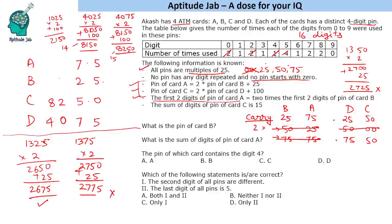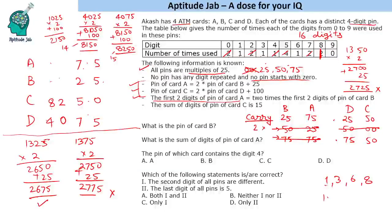Now let's find the digits remaining for A and B. Digits used so far: 0 (used), both 2s (used), 4 (used), all four 5s (used), both 7s (used), one 8 (used). The digits still available for the four positions in A and B are 1, 3, 6, and 8. We need two two-digit numbers where the first is double the second. The only possibility is 36 = 2 × 18. So B's first two digits are 18 and A's first two digits are 36.